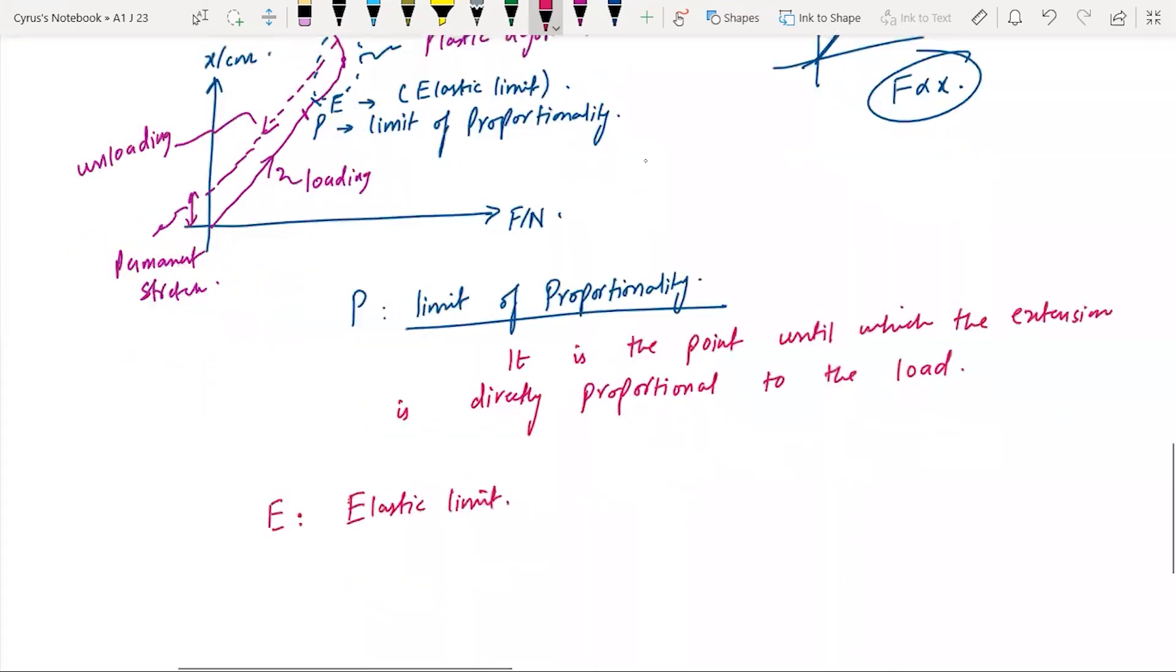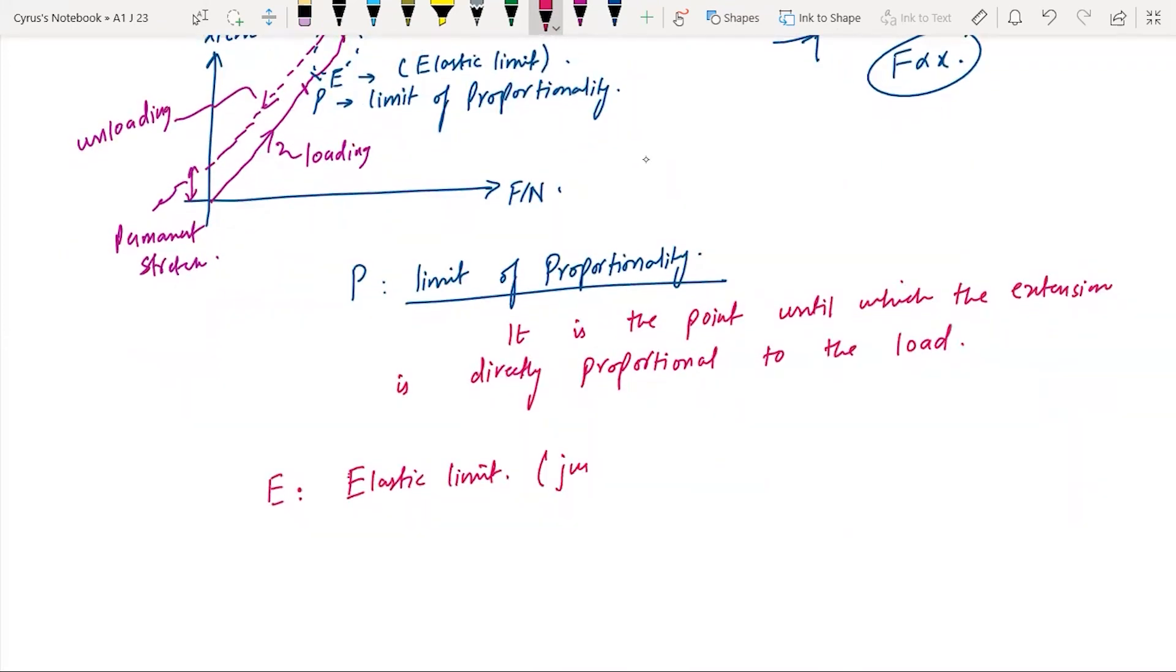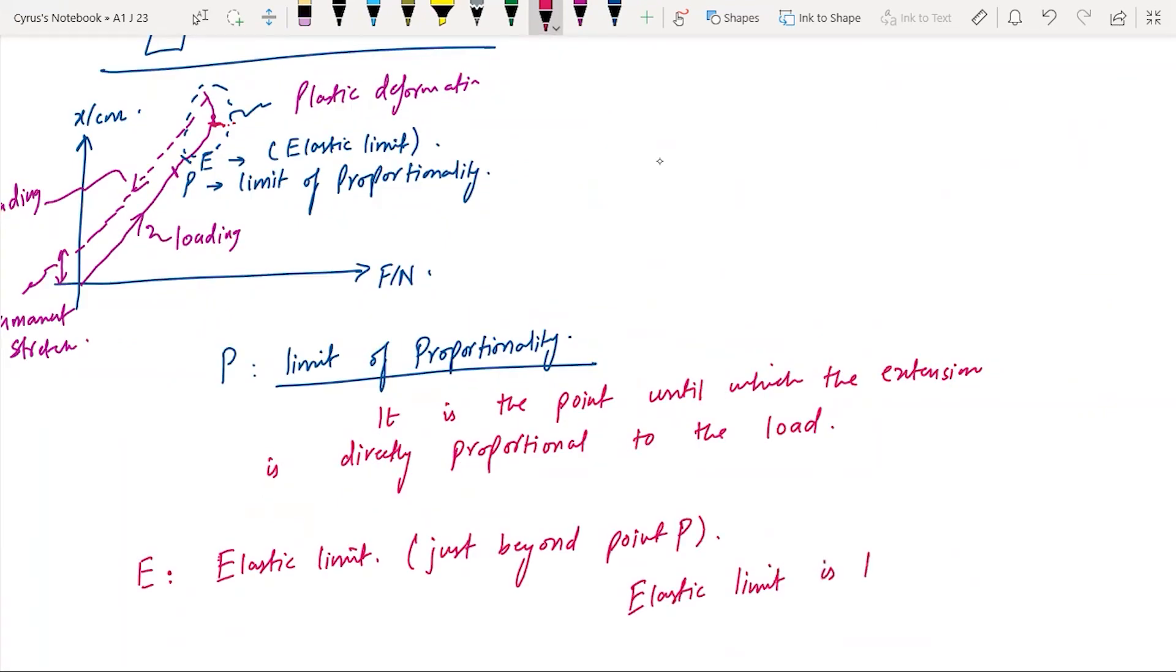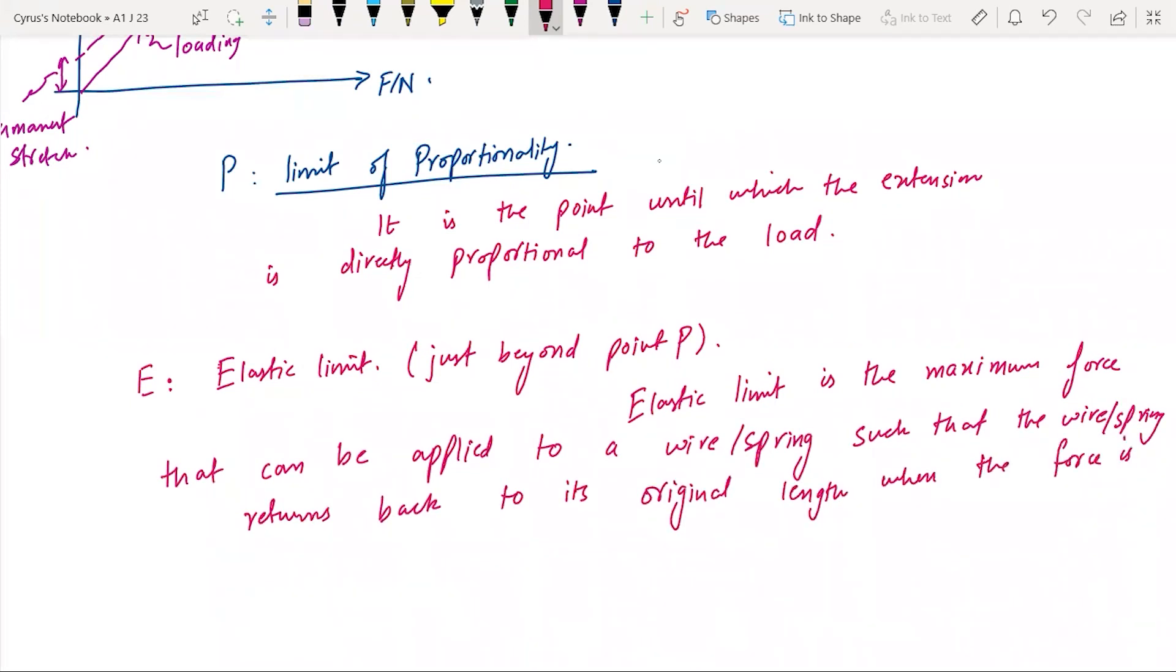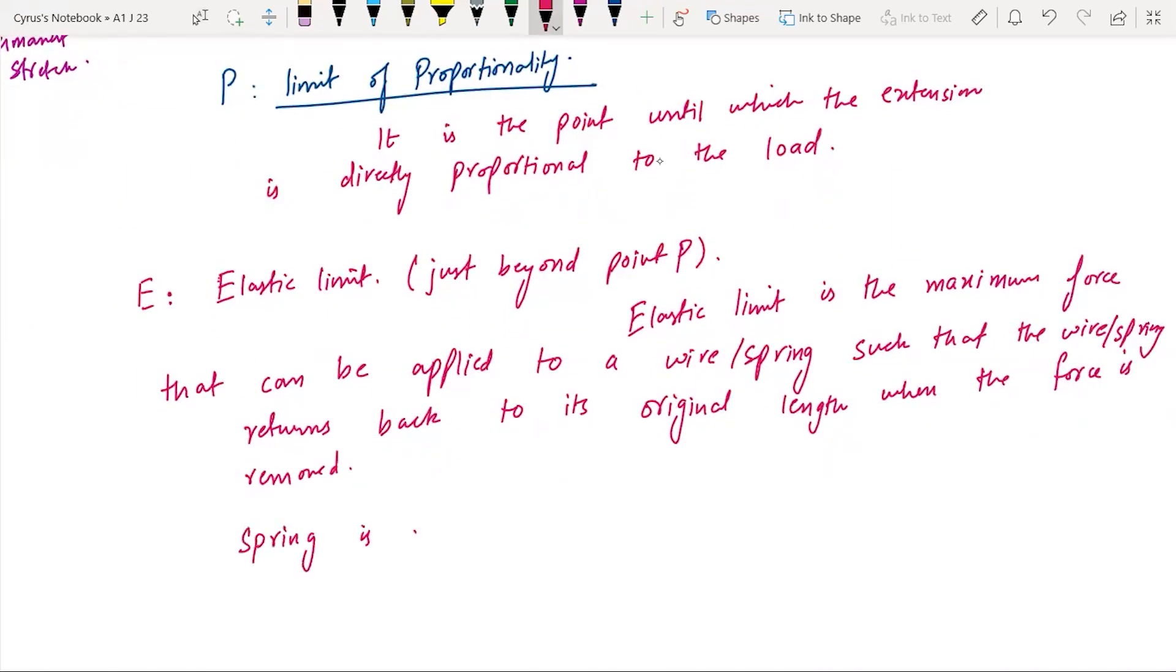This region is what we call the plastic region, the plastic deformation. This is loading and this is unloading. When you have unloaded, there is a permanent stretch. Point P is known as the limit of proportionality - it is a point until which the extension is directly proportional to the force.